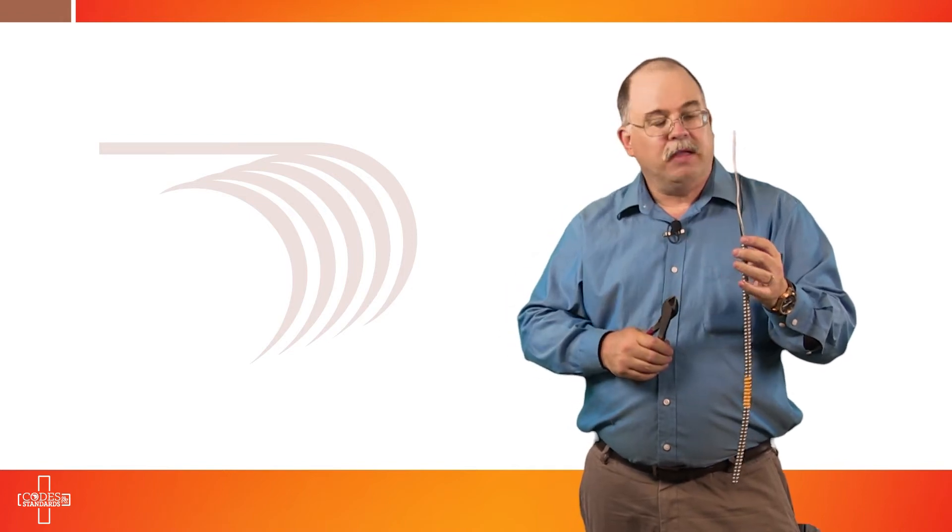Now, once you've done that and you've trimmed back the aluminum grounding slash bonding conductor, you've trimmed back the paper, now you're ready to select the proper fitting or connector to complete this process.